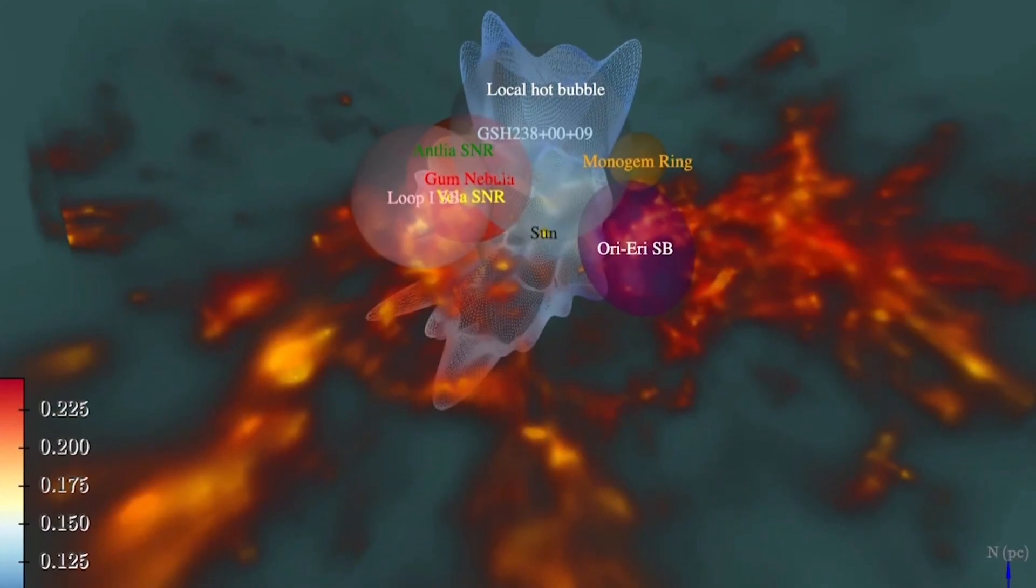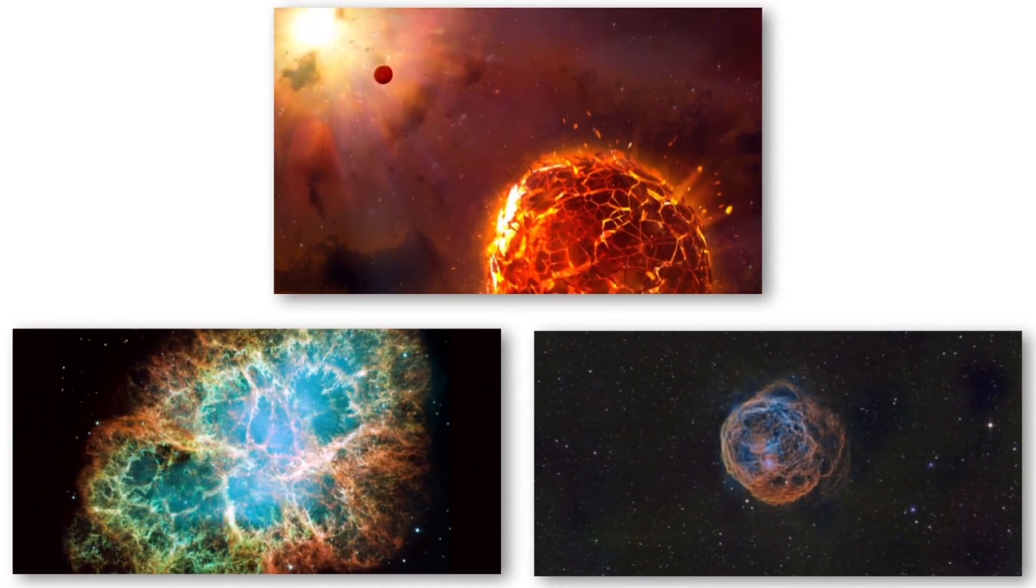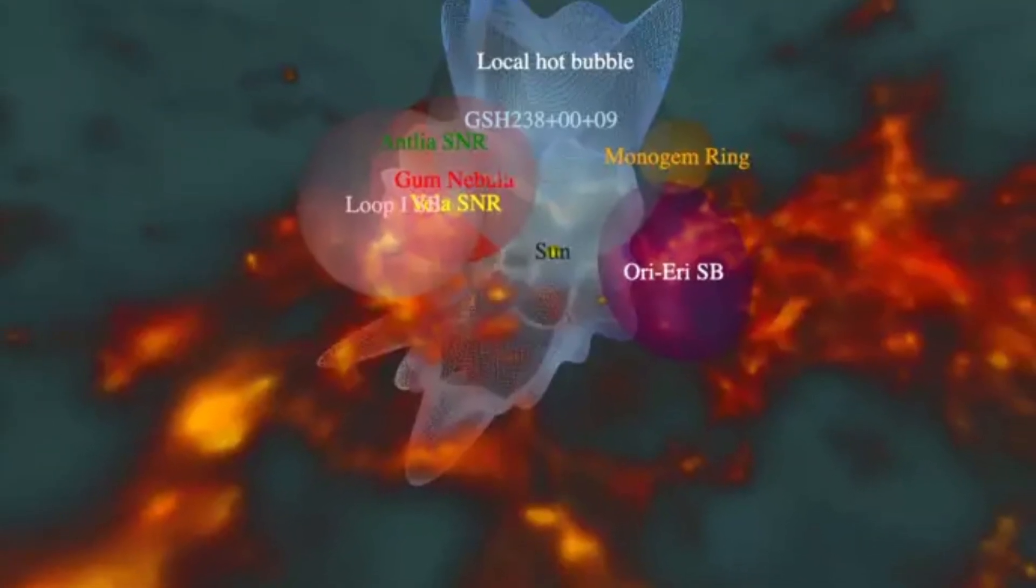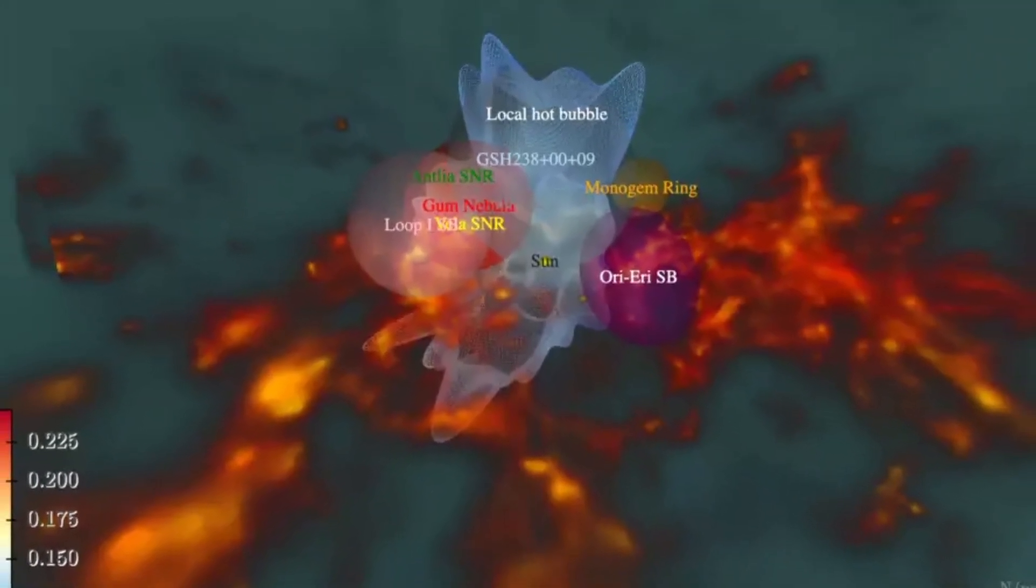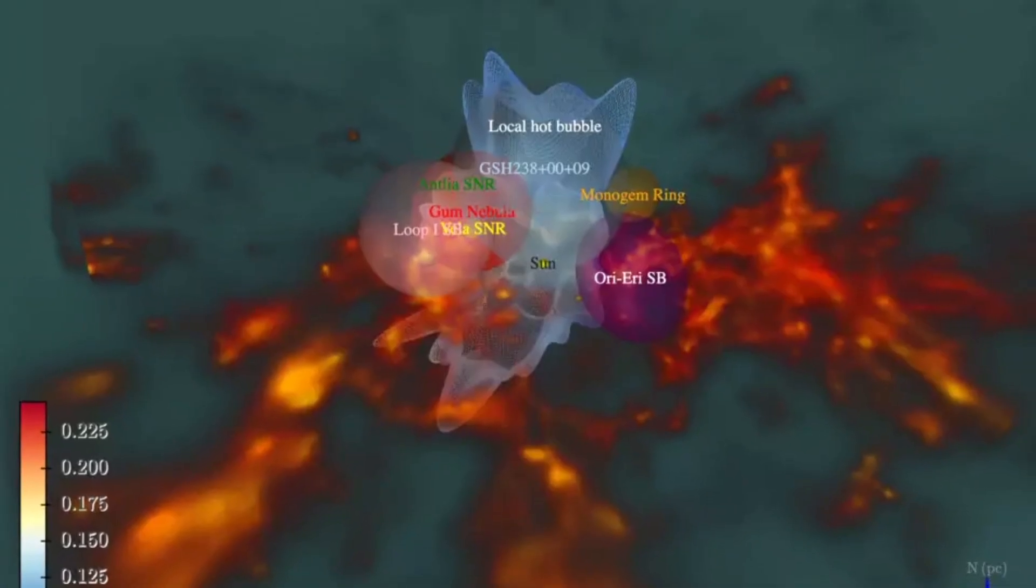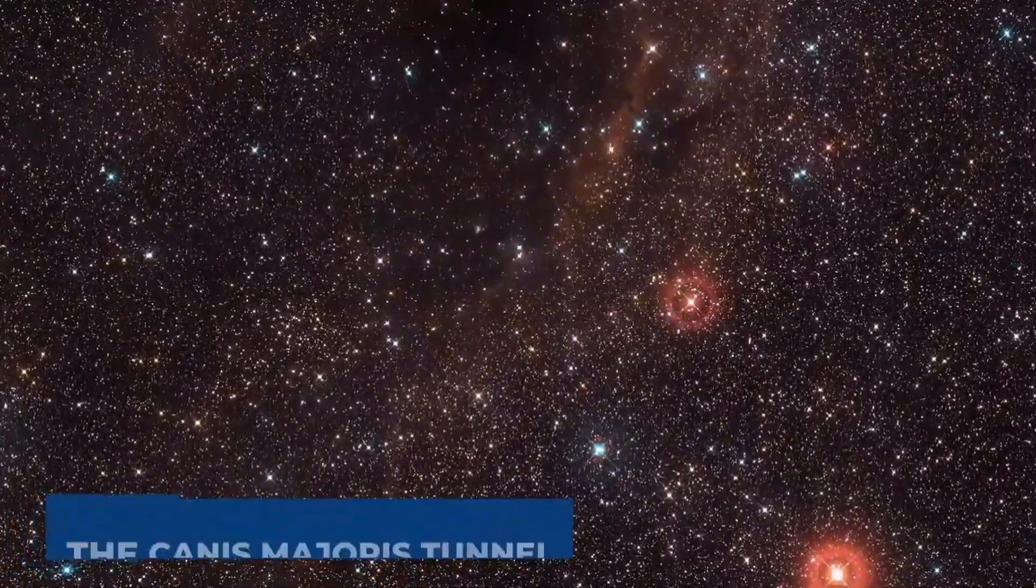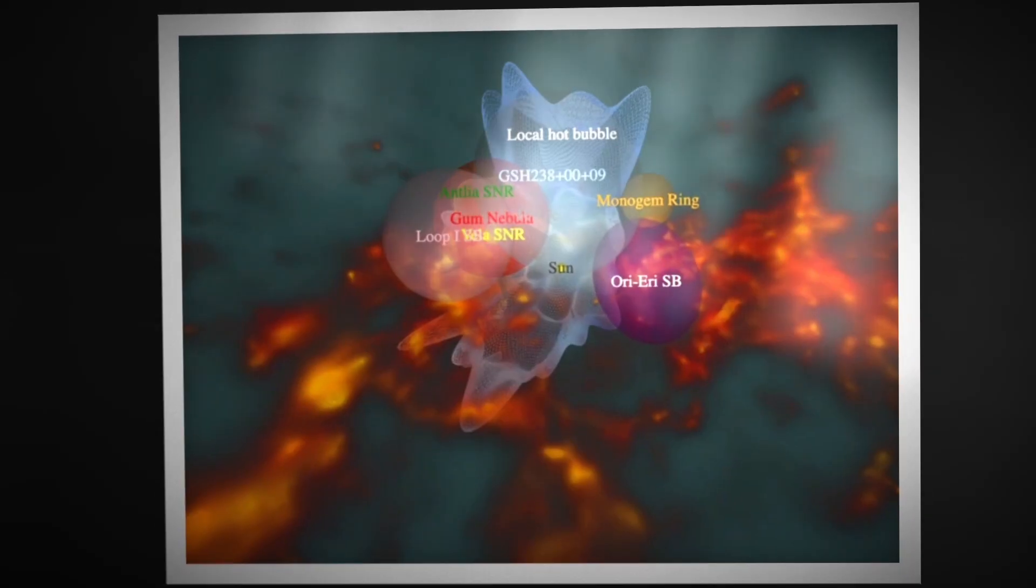In addition to the 3D map of the local bubble, the team also created a census of supernova wreckage, super bubbles, and dust, which they incorporated into the map to build a 3D interactive model of the solar system's cosmic neighborhood. This included another previously known interstellar medium tunnel called the Canis Majoris Tunnel. This is thought to stretch between the local bubble and the gum nebula.